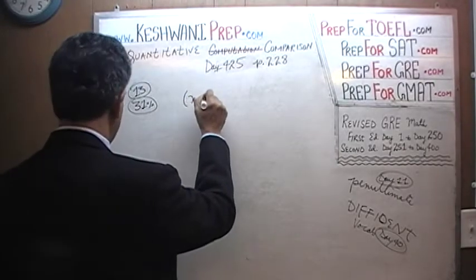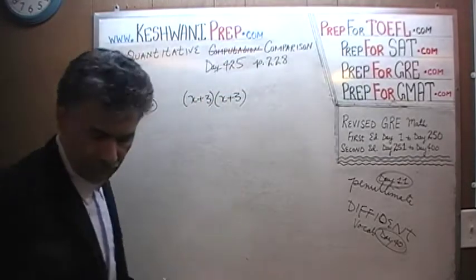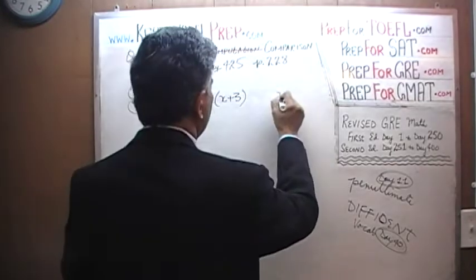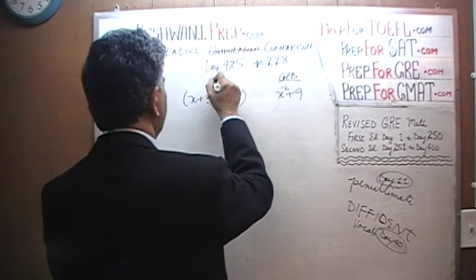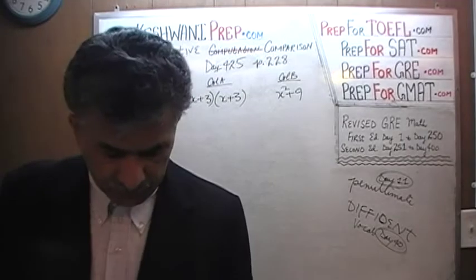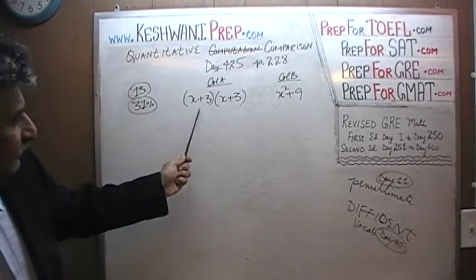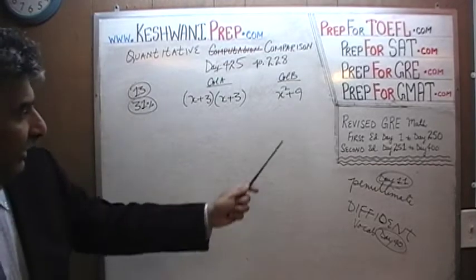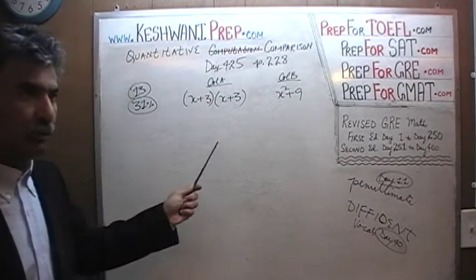The problem is: x plus 3 times x plus 3 — this is strange, peculiar — versus x squared plus 9. Here is your column B, here is column A. They want you to tell them which column is bigger. Simple and straightforward. Pause the video, do it yourself. x plus 3 times x plus 3 versus x squared plus 9. I will give you 5 seconds — pause and solve it yourself.